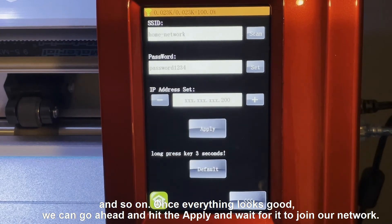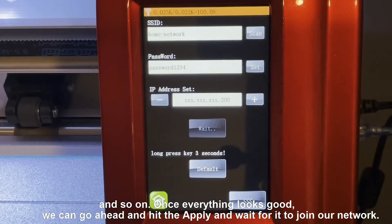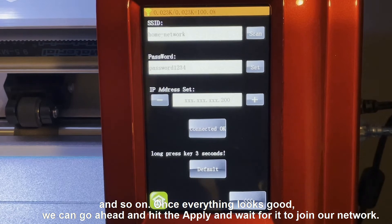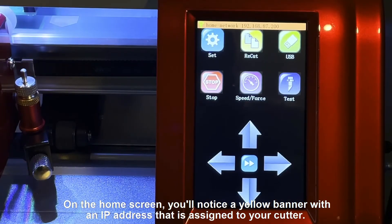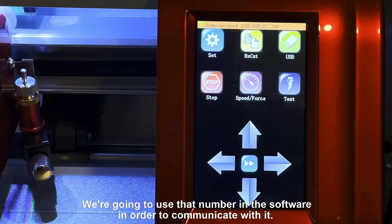Once everything looks good, we can go ahead and hit the apply and wait for it to join our network. On the home screen you'll notice a yellow banner with an IP address that is assigned to your cutter. We're going to use that number in the software in order to communicate with it.